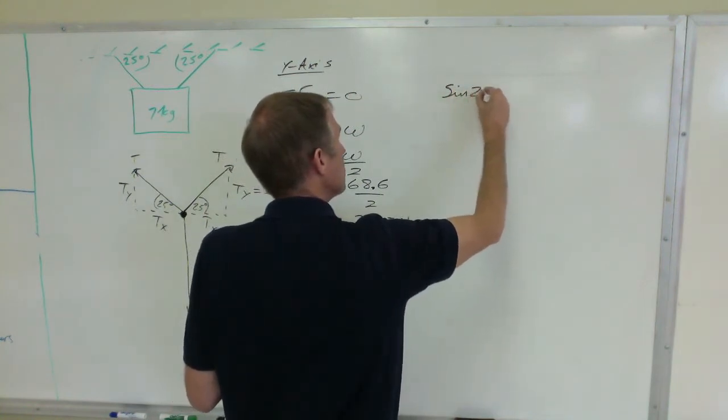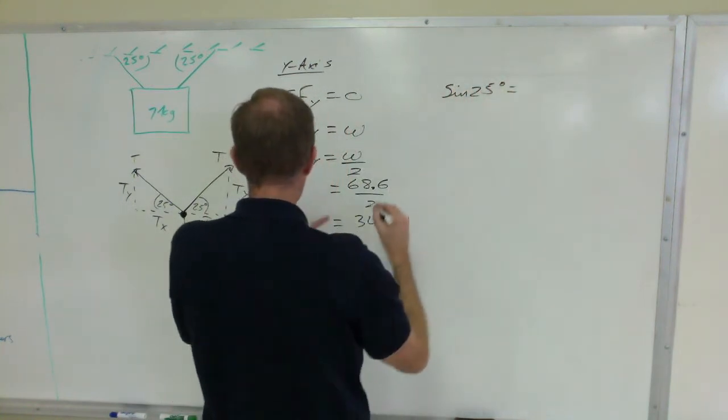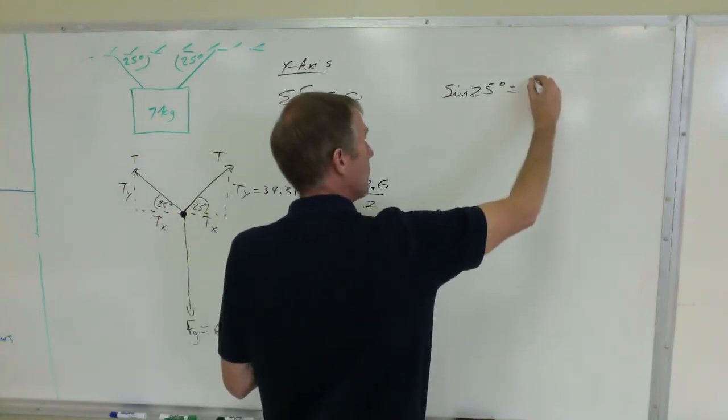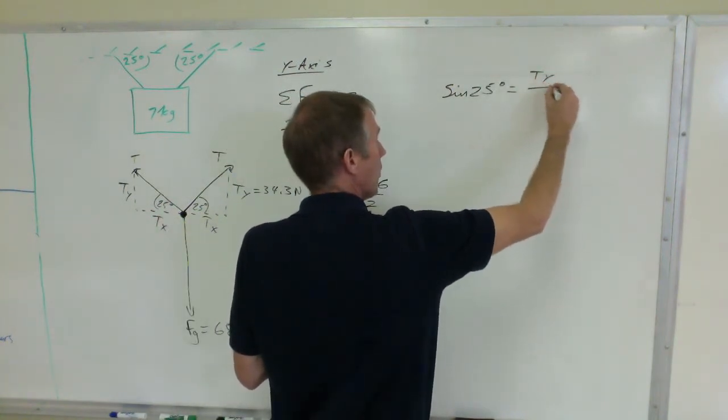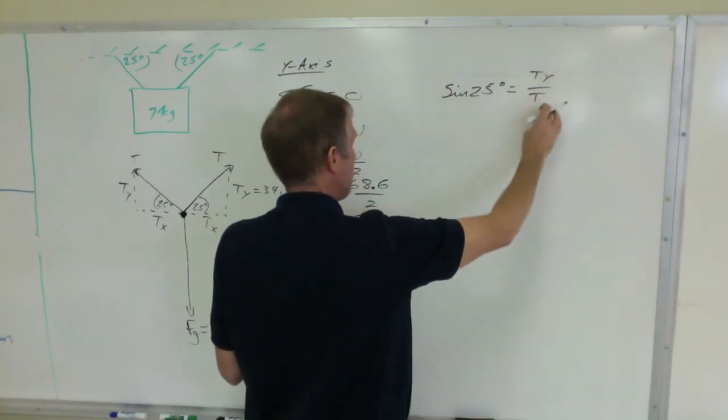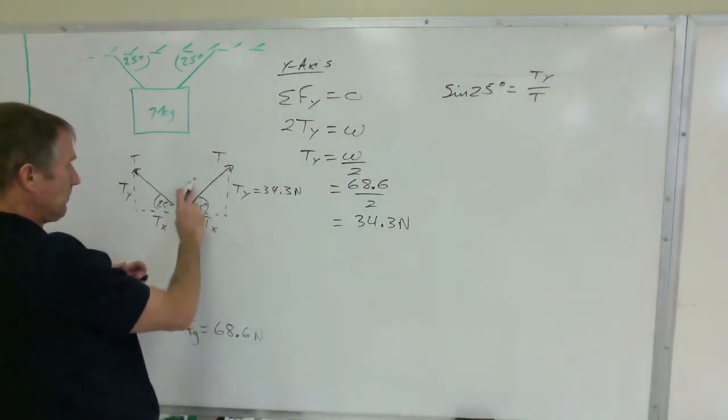The sine of 25 degrees equals opposite, which is Ty, over hypotenuse, the opposite side over the hypotenuse.